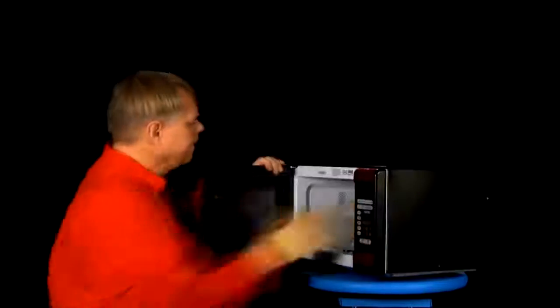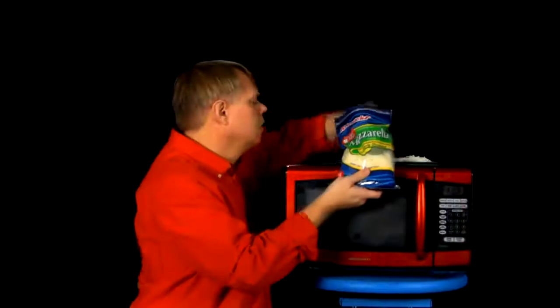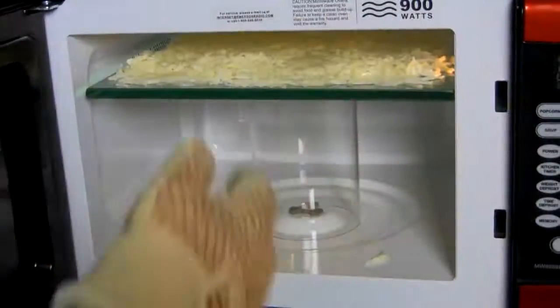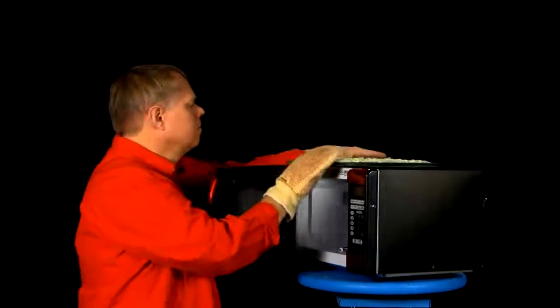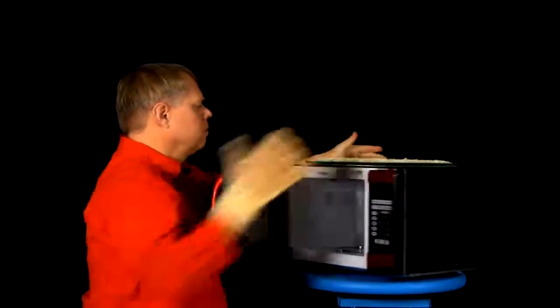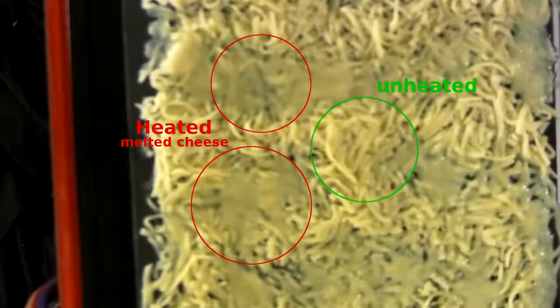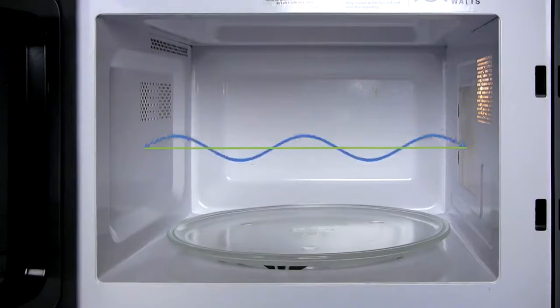Now, you can get an idea of the wavelength of the energy emitted from the magnetron using cheese. You can see on here sections where the cheese is completely melted and other sections where it's completely unheated. The oven's metal walls only reflect waves of a length that fits inside the oven. This standing wave causes hot and cold spots inside the oven.